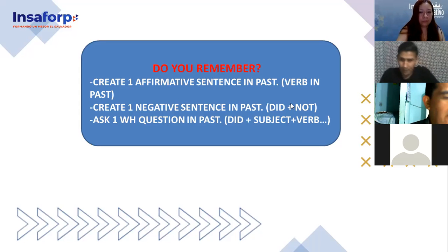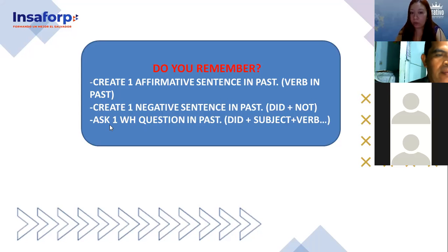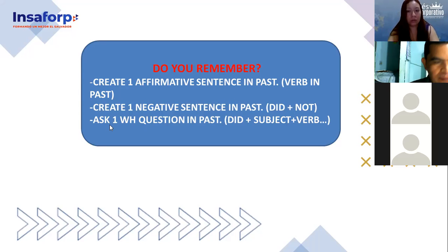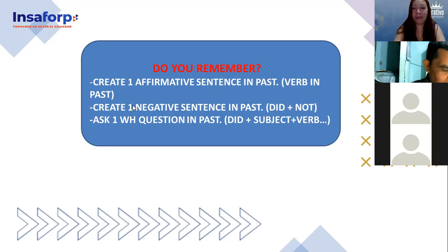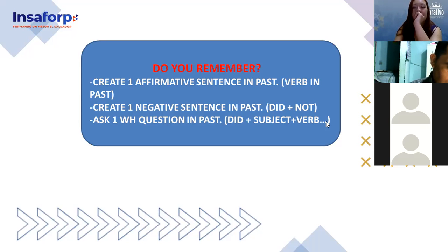And with that we conclude. Now, ask one question — one WH question in past. We're going to ask an information question. The structure: WH word + did + subject + verb. For example: 'Where did you go?' Where did you go?